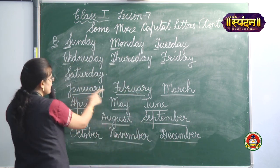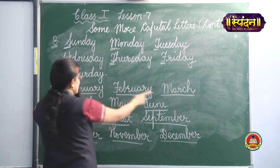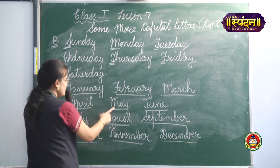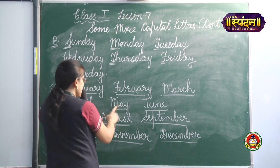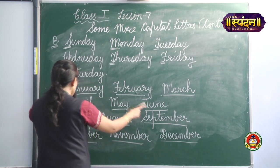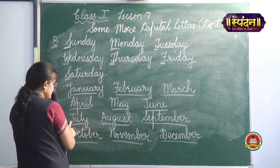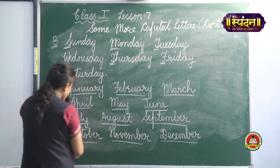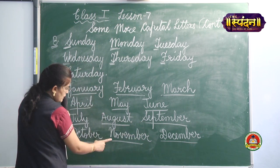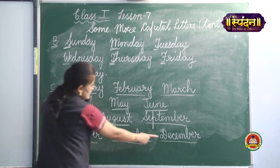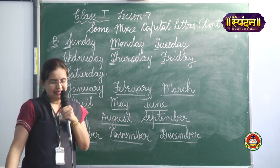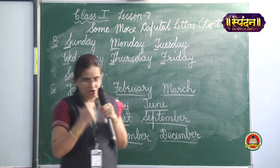J for January will be in capital, F for February, M for March, A for April, M for May, J for June, J for July, A for August, S for September, O for October, N for November, and D for December will be in capitals.